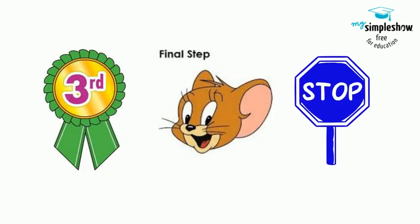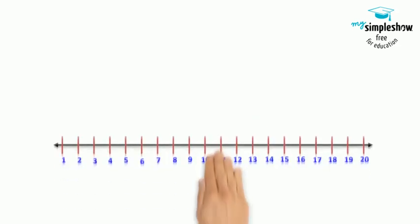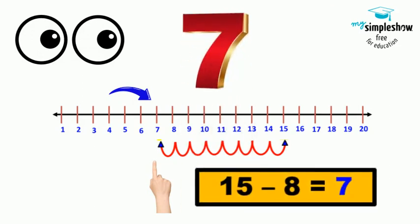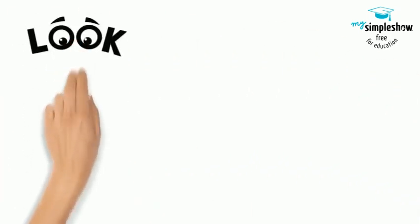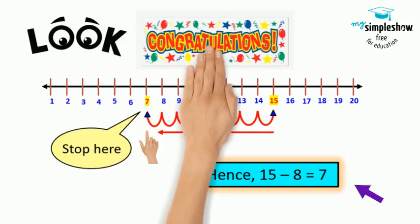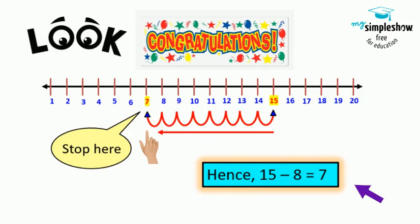Can you see the number where you have stopped? Yes, you have stopped at the number seven. Look, therefore 15 minus 8 is equal to 7. So now by looking at the number line we can easily tell the answer: 15 minus 8 equals 7. Congratulations, you have got the answer!